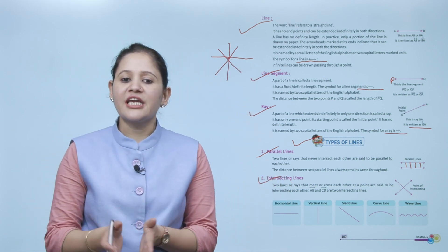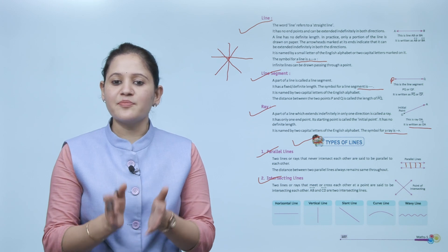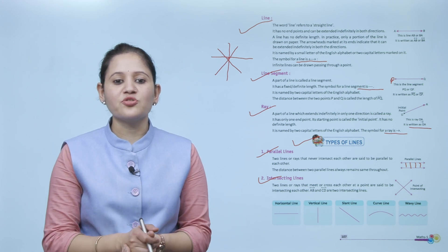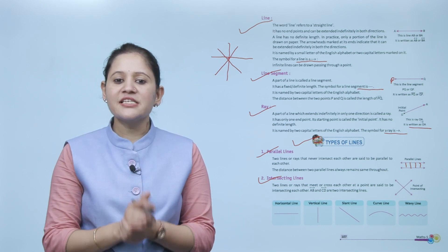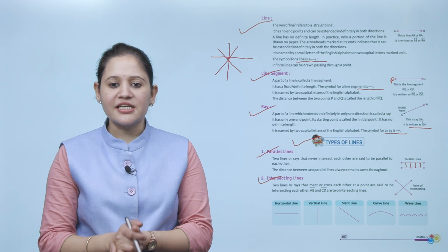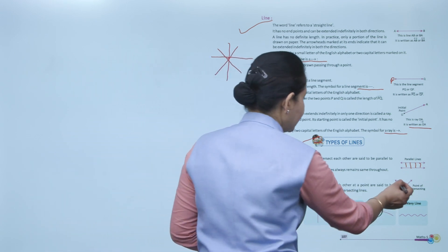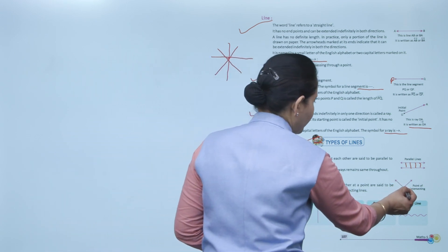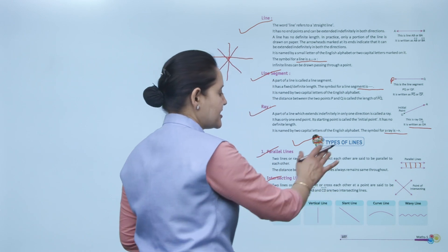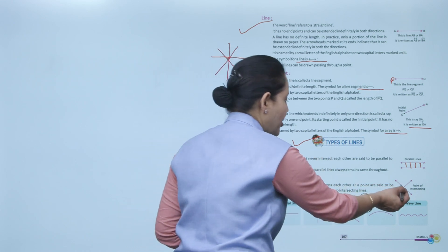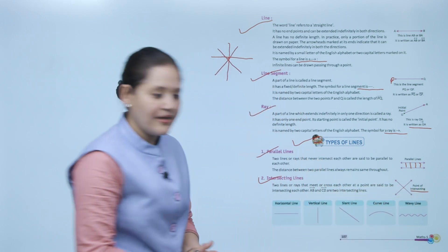Next is intersecting lines. Two lines or rays that meet each other at a point are said to be intersecting. AB and CD are two intersecting lines — if two lines intersect each other at one point, that point is known as the point of intersection.